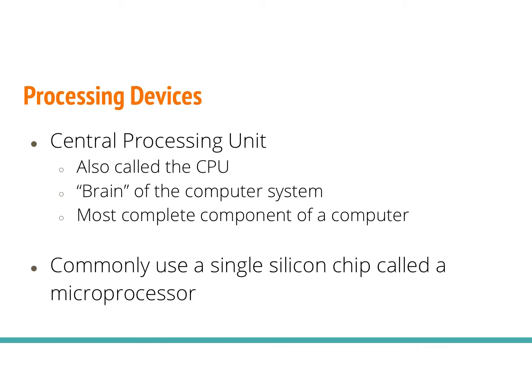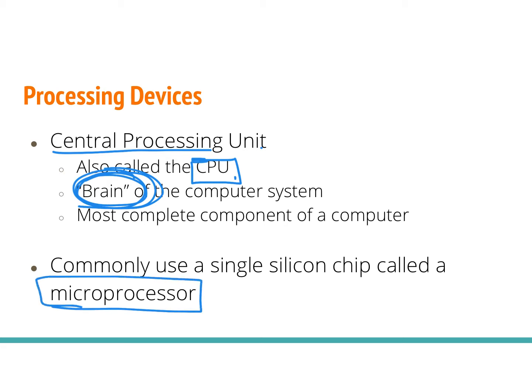The main processing device you need to be aware of is called the central processing unit, or the CPU. This is probably one of the most commonly known parts of your computer because it is literally the brain of your computer — it's where all of that processing and thinking and information is dealt with. It's commonly housed on a single silicon chip called a microprocessor.